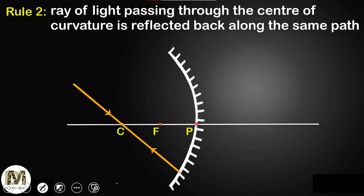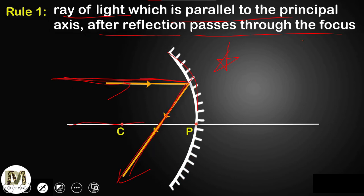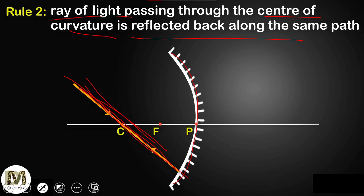Rule number two: a ray of light passing through the center of curvature is reflected back along the same path — back to the center. So if a ray passes through or comes from the center, it reflects back to the center itself. Rule number three: a ray of light passing through the focus, after reflection, becomes parallel to the principal axis. Rules one and three are vice versa of each other — if coming parallel it goes to focus; if coming from focus it goes parallel.